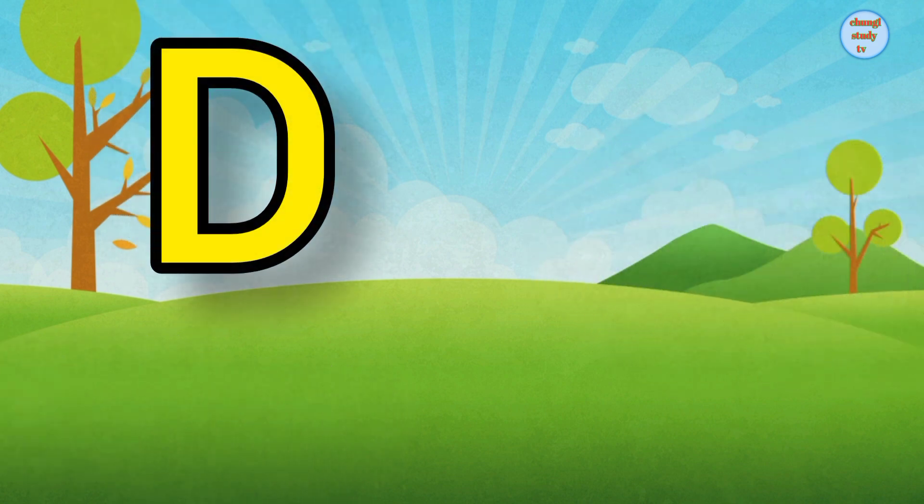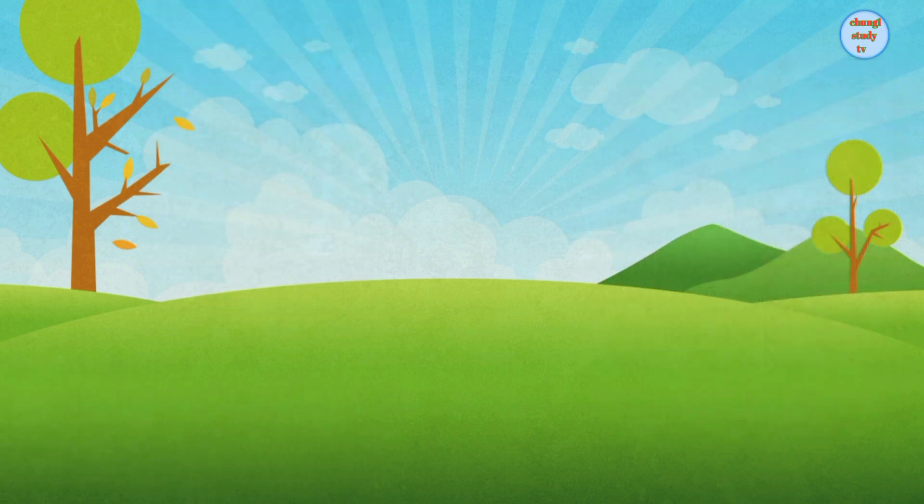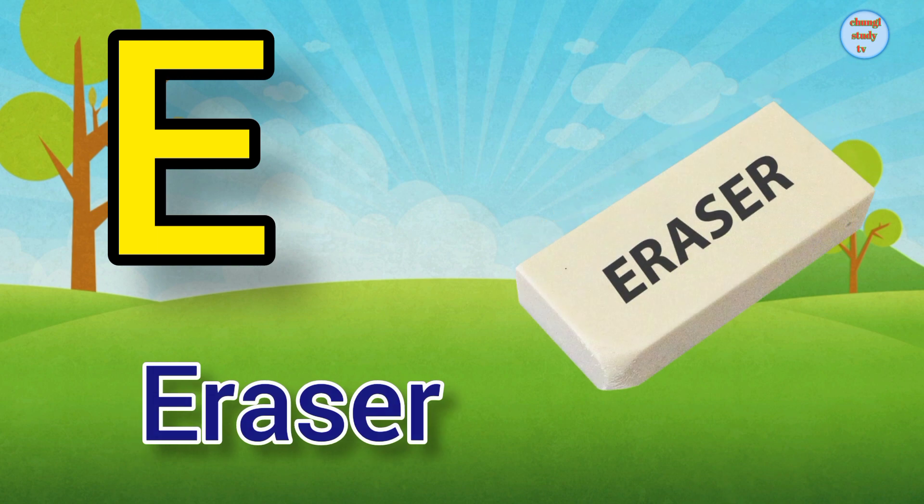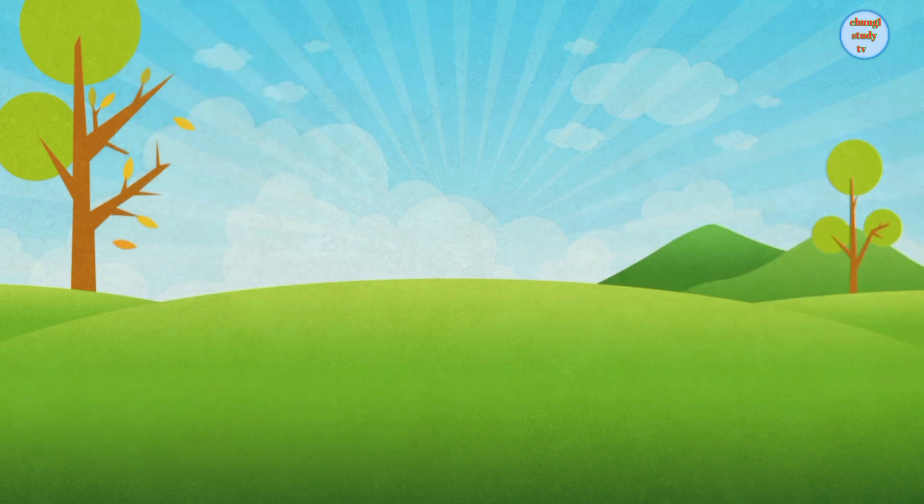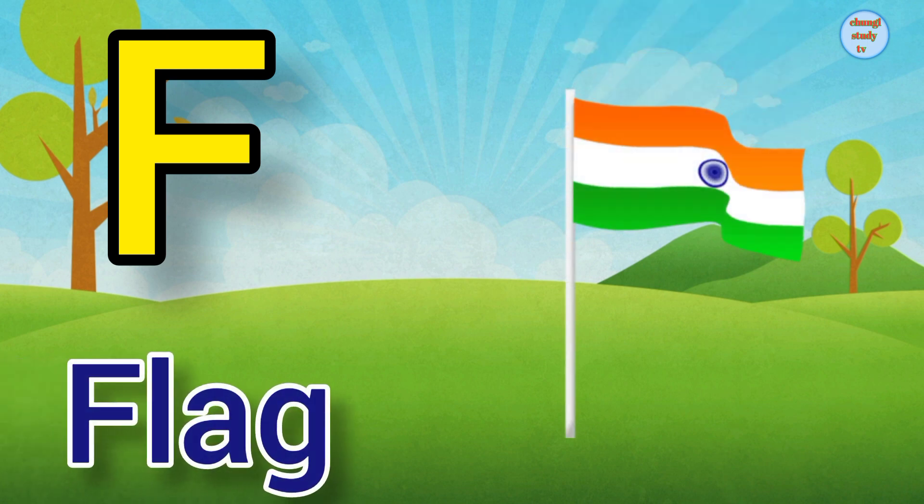D. D for Door, Door means darwaza. E. E for Eraser, Eraser means rubber. F. F for Flag, Flag means janda.